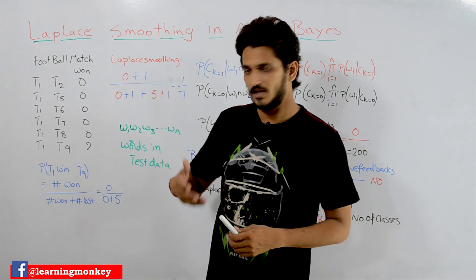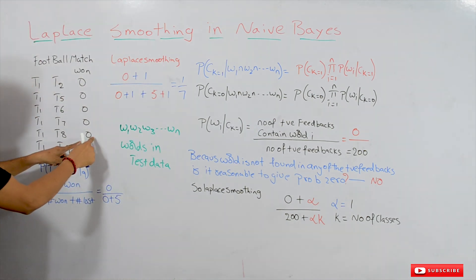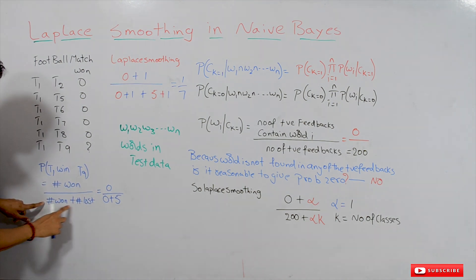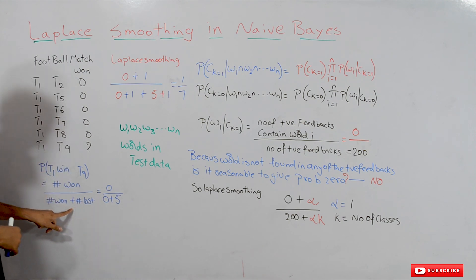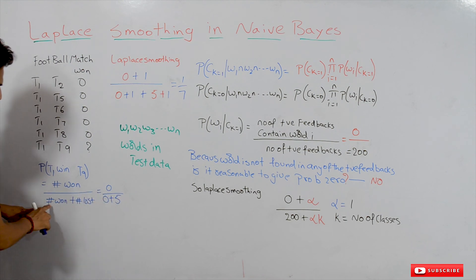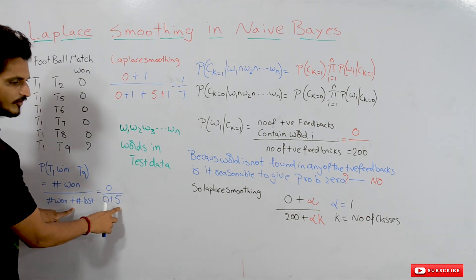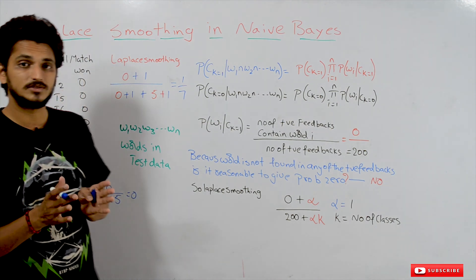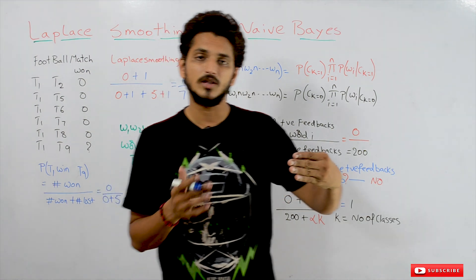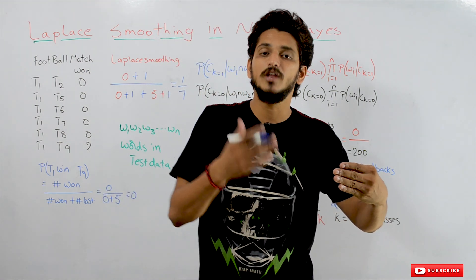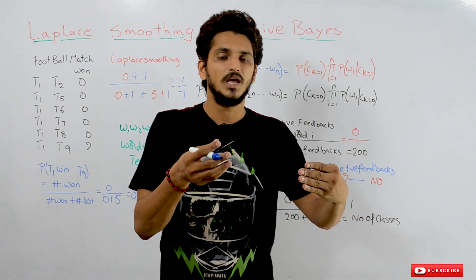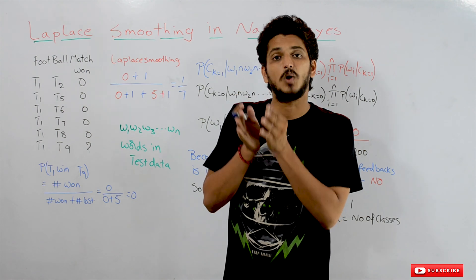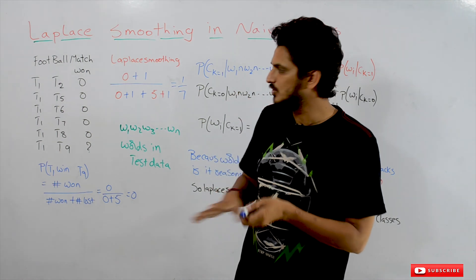Based on this data, how do we identify the probability that T1 wins on T9? Number of matches T1 won divided by number of matches won plus number of matches lost. Number of matches won equals 0, number of matches lost equals 5, so we get 0 divided by 5, which is 0. Because T1 has lost all the games before, can we say T1 will not win? Can we give a 0 probability? No — we have to give some small probability. That is why we use Laplace smoothing.